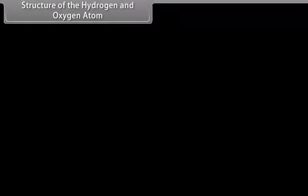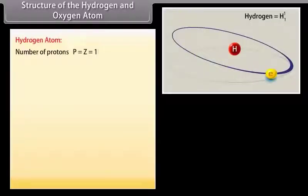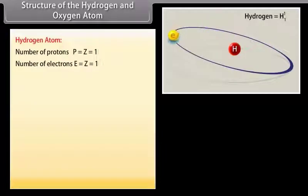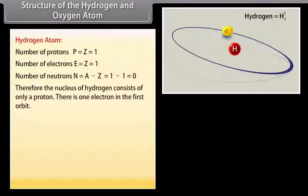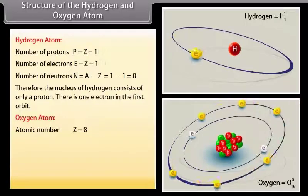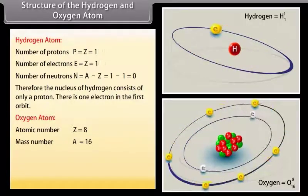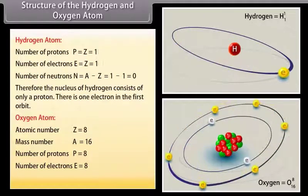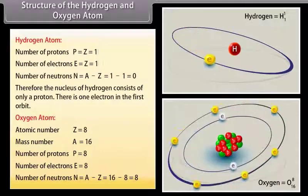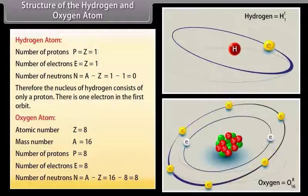Structure of the hydrogen and oxygen atom. Hydrogen atom: number of protons P = Z = 1; number of electrons E = Z = 1; number of neutrons N = A − Z = 1 − 1 = 0. Therefore, the nucleus of hydrogen consists of only a proton, and there is one electron in the first orbit. Oxygen atom: atomic number Z = 8, mass number A = 16; number of protons = 8, number of electrons = 8, number of neutrons N = A − Z = 16 − 8 = 8.